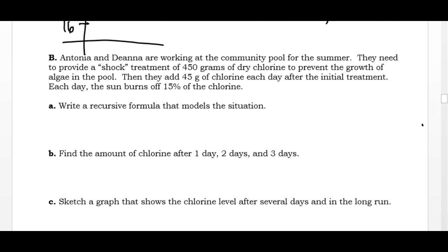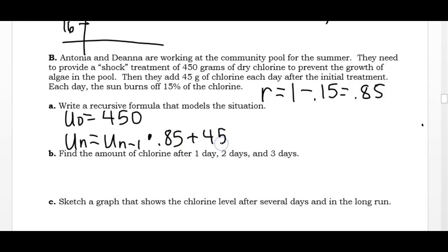So we're going to write a formula to model the situation. I'm going to do my side calculation for R first. If I have 100% and I'm removing 15% because of evaporation, that means 85% remains in the pool each day. So my starting value, I start with 450 grams and 85% of that remains in the pool each day, and I'm going to add 45 more grams for maintenance every day.